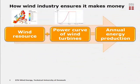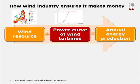How does the wind industry ensure it makes money? One part of the answer is a simple equation: you take the wind resource, which tells how much wind there is at a specific location, add the power curve of the wind turbine, and get the annual energy production. This tells how much energy the wind farm will produce every year, which you can convert into money. My focus is the power curve measurement of wind turbines.